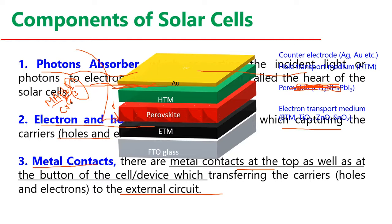To find a research gap, don't just watch videos — go download papers on perovskite solar cells and read the abstract and introduction. You will see where the gaps are. If you have a problem, ask me in the comments and I will show you how to find a research gap from a single paper. Then start writing your research proposal, take admission in your PhD, and get to work.